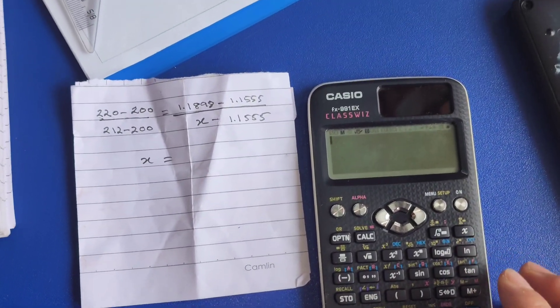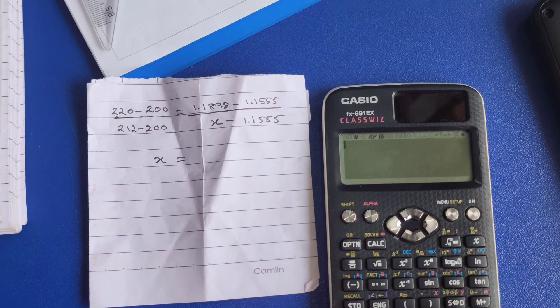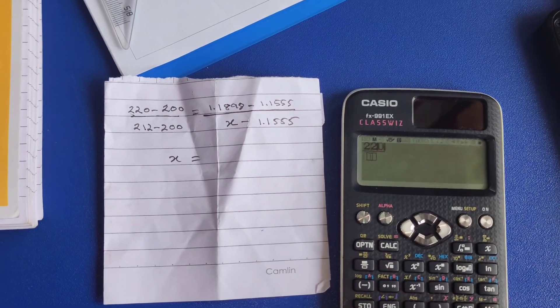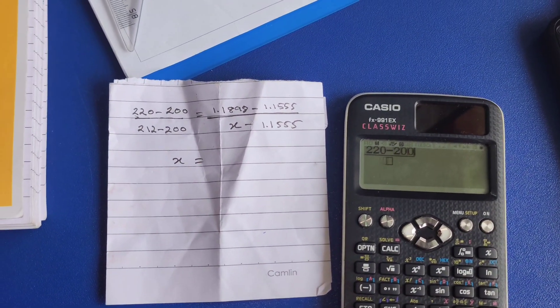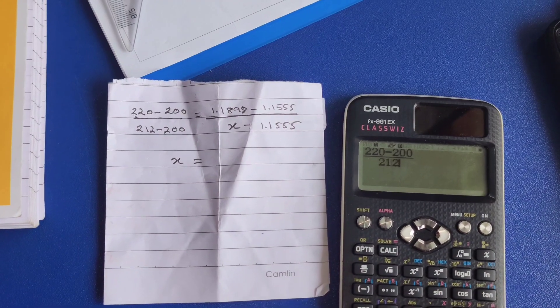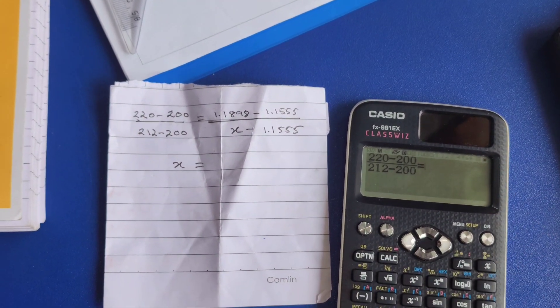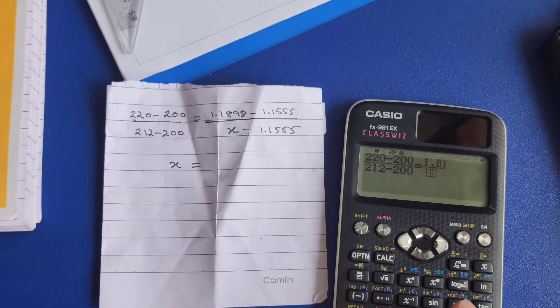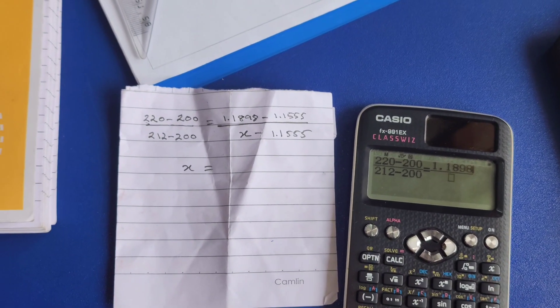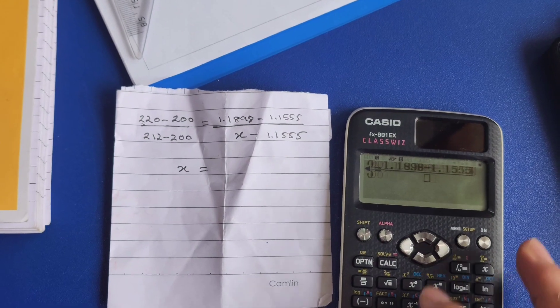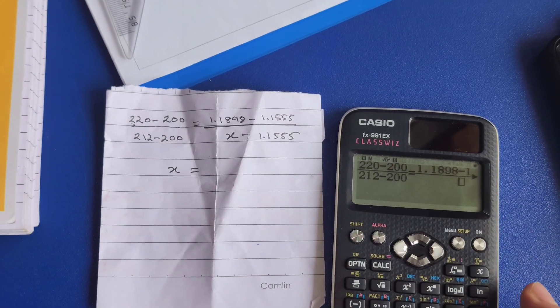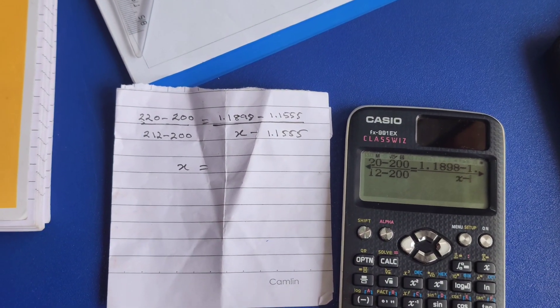Hello everyone, after my previous video I've got a lot of questions asking me how to add an equal sign in the Casio FS 991 CW, the latest version of Casio calculator. So I'm gonna show you how to do it.